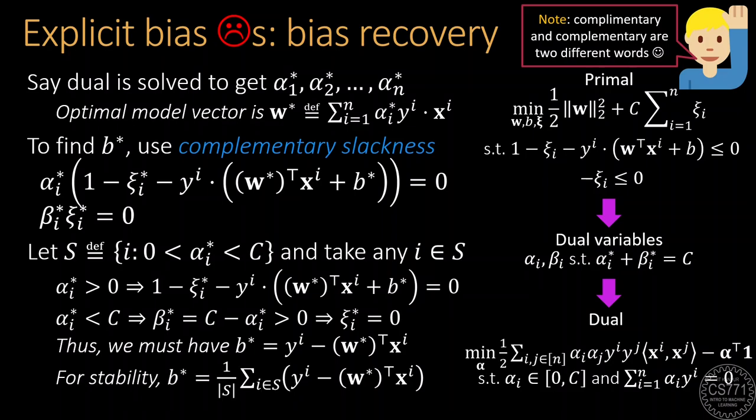In practice, for numerical stability, we usually calculate the value of b* by using every i such that alpha*_i is strictly between 0 and C and taking the average.